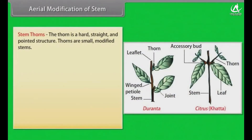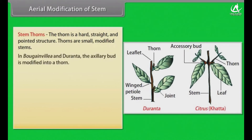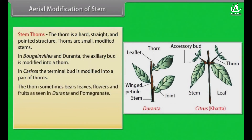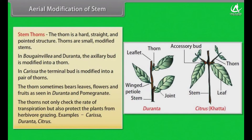The thorn is a hard, straight and pointed structure. Thorns are small, modified stems. In Bougainvillea and Duranta, the axillary bud is modified into a thorn. In Carissa, the terminal bud is modified into a pair of thorns. The thorn sometimes bears leaves, flowers and fruits, as seen in Duranta and pomegranate. The thorns not only check the rate of transpiration but also protect the plants from herbivore grazing. Examples: Carissa, Duranta, Citrus.